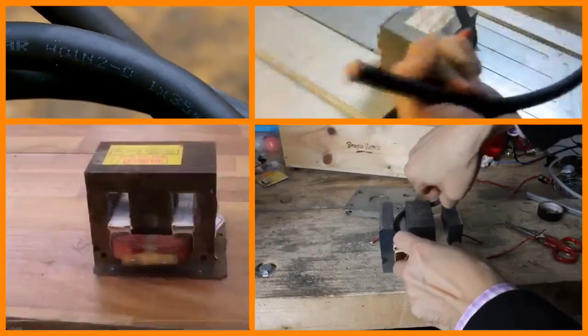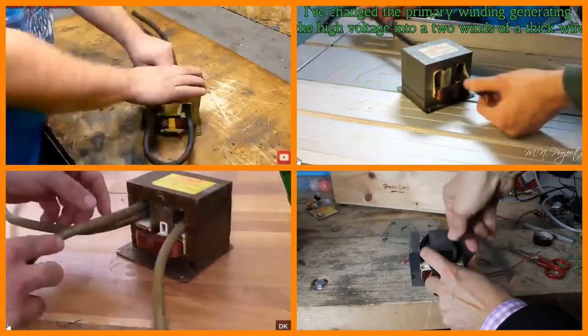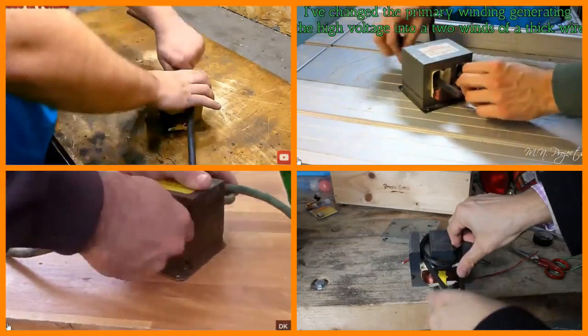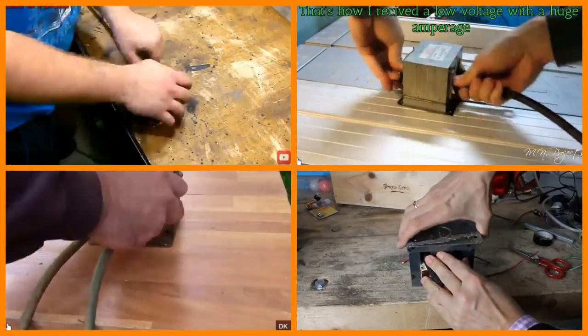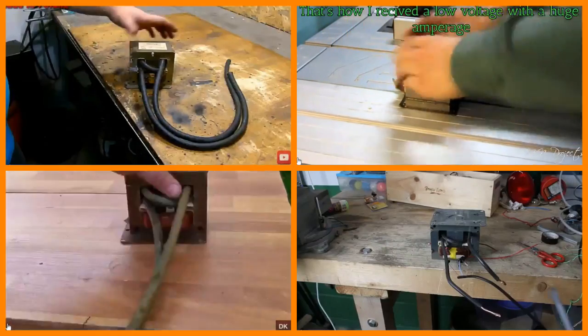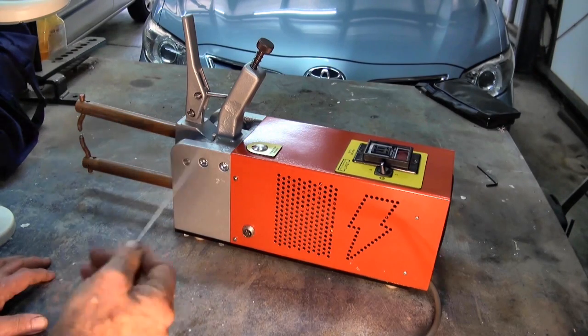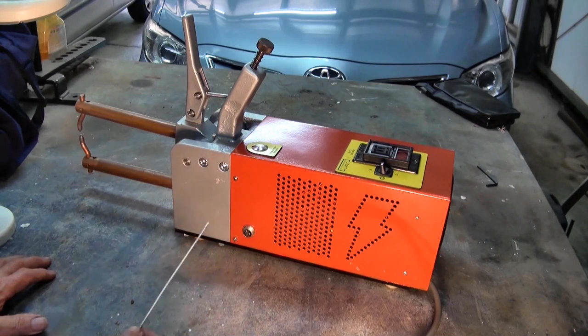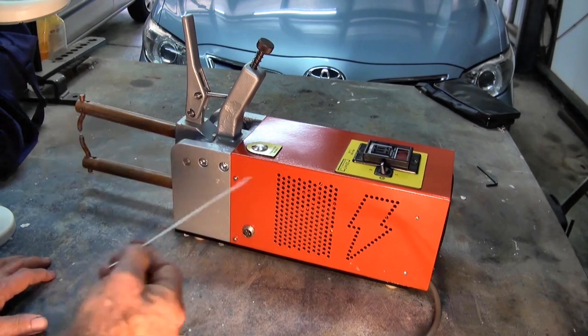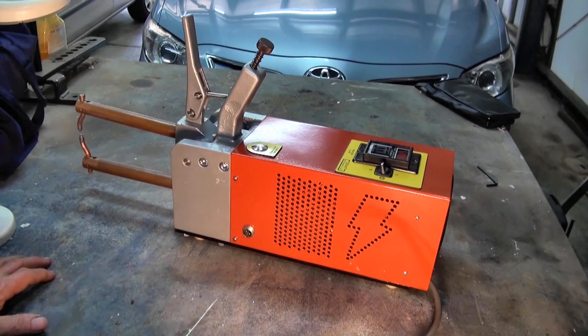It's got a good strong clamping system, it has a digital timer, and it uses the standard microwave oven transformer that's been modified in the same way that you would see on literally dozens of different YouTube videos. I've been able to get pretty good welds from this machine.